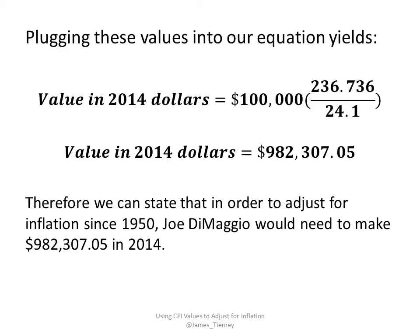Therefore, we can state that in order to adjust for inflation since 1950, Joe DiMaggio would need to make $982,307.05 in 2014. I hope that was helpful, and feel free to give me a follow on Twitter at James_Tierney.